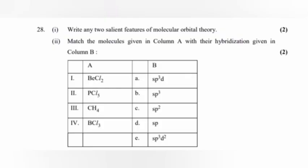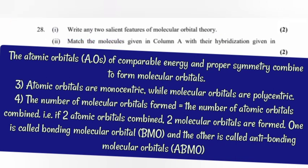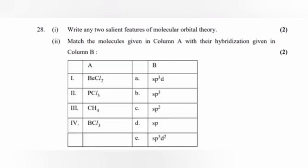Question 28, part 1: Write any two salient features of molecular orbital theory. Answer: In molecules, the electrons are present in some special type of orbitals called molecular orbitals. The atomic orbitals of comparable energy and proper symmetry combine to form molecular orbitals. Atomic orbitals are monocentric while molecular orbitals are polycentric. The number of molecular orbitals formed equals the number of atomic orbitals combined. That is, if two atomic orbitals combine, two molecular orbitals are formed. One is called bonding molecular orbital BMO and the other is called antibonding molecular orbital ABMO. Write any two.